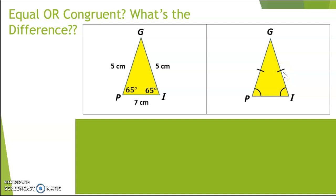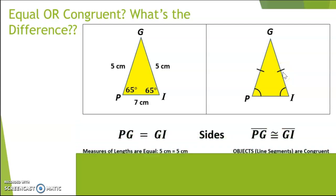So what's the difference? When you're looking at the first triangle, you would say that PG is equal to GI, which are the two five centimeter markings, because the actual measure of those lengths are equal. So I know the measurement, which is five centimeters. It's like saying five equals five. That makes sense.